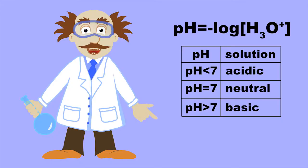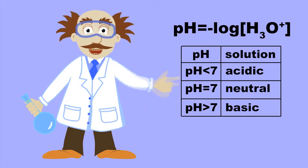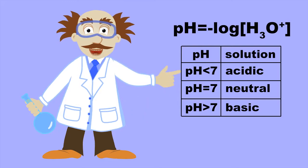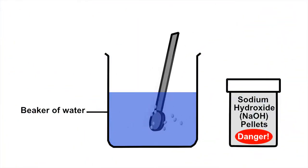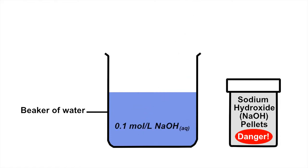The relative excess of hydronium ions this implies compared to pure water demonstrates why solutions with a pH of less than 7 are considered acidic. Finally, consider a solution obtained by dissolving solid sodium hydroxide in water to obtain a 0.1 mole per litre solution of sodium hydroxide.